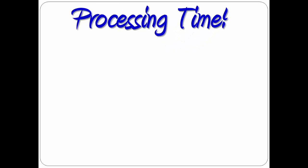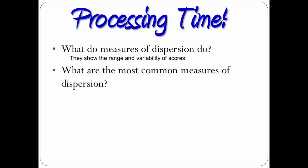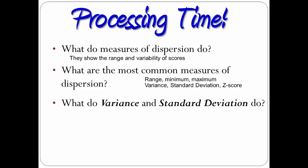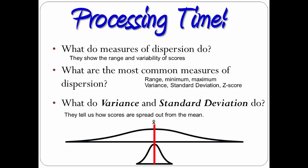Processing time. What do measures of dispersion do? They display the range and variability of scores. The most common measures are the range, minimum, and maximum, but also variance, standard deviation, and z-score. What do variance and standard deviation do? They tell us how scores are spread out from the mean. The higher the number, the more spread out the distribution; the lower the number, the more compressed the scores. With your basic understanding of measures of dispersion, it's time to pull out your calculator and start calculating them.